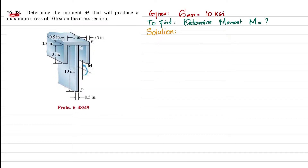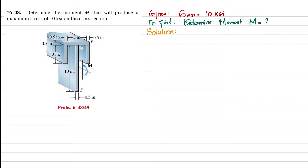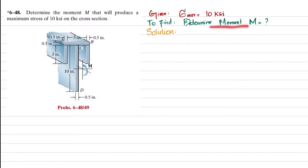Welcome back. Problem 6-48: determine the moment M that will produce a maximum stress of 10 ksi on the section. You can see this is the section where moment M is applied. The cross section of this beam is shown as a T-shape, with a width of 4 inches and total height of 10.5 inches. All dimensions are shown. We have to find this moment M.